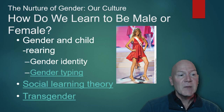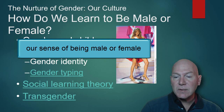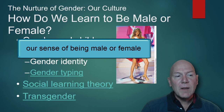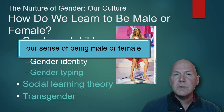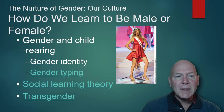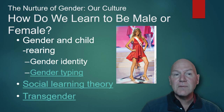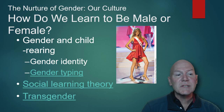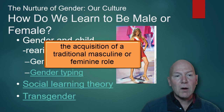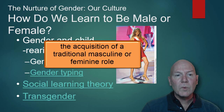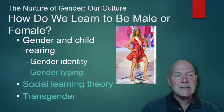Gender identity is which gender role you identify with — it could be male or female, and this has nothing to do with biological sex. A biological female may identify as male. The process of taking on these ideas is called gender typing, where a person acts like a little scientist and decides which gender they identify with.